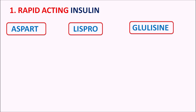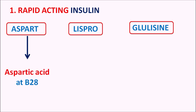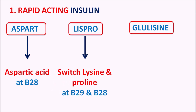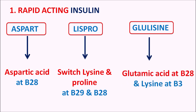Within the name we can easily identify the amino acid modification. Insulin aspart is derived from replacement of the amino acid at B28 with aspartic acid. In lispro, two amino acids are switched — lysine and proline at positions B29 and B28. In glulysine, glutamic acid is added at B28 and lysine replaces the amino acid at the B3 position.